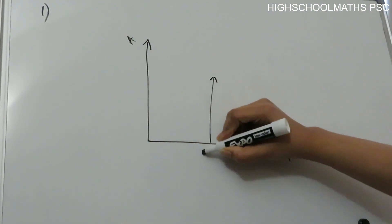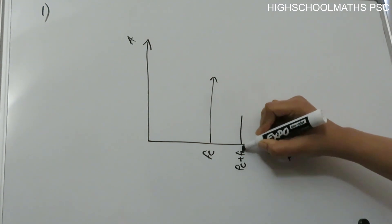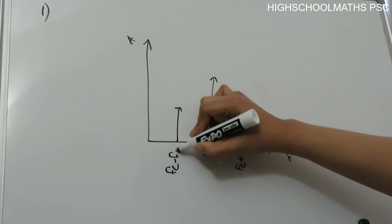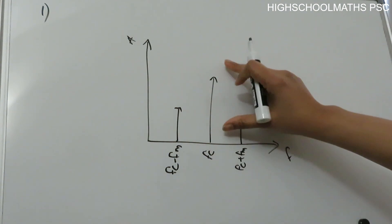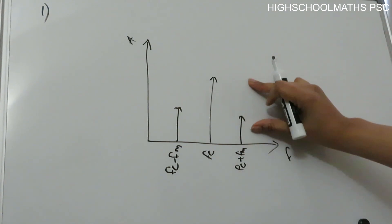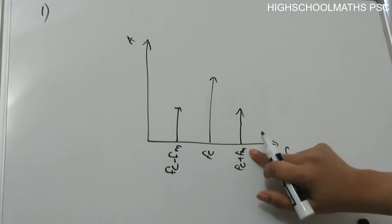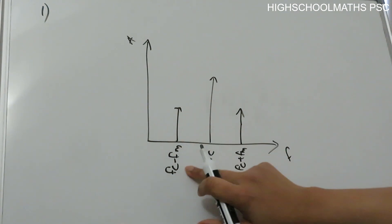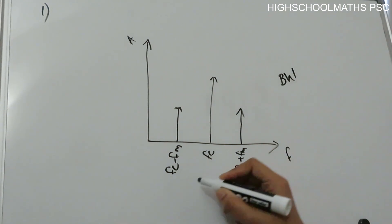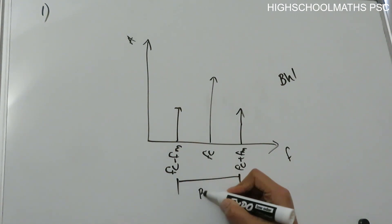In the frequency spectrum, the carrier signal is at Fc. We have an upper sideband at Fc plus Fm, and a lower sideband at Fc minus Fm. The bandwidth is the difference between the higher frequency and the lower frequency component — that is, 2Fm.